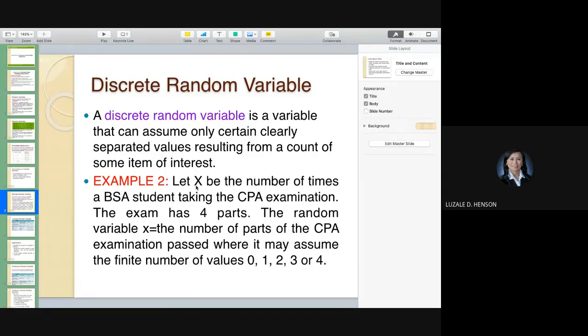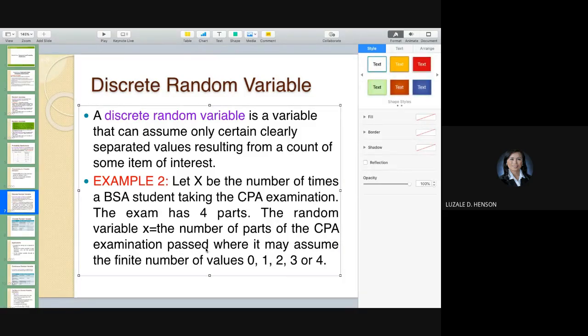For example, let X be the number of times a Bachelor of Science student, graduate student, taking the CPA examination. Say, for example, it has four parts, or although I know it has six, I don't know. Let's just say we have four parts. The random variable X, which is the number of parts of the CPA examination passed by a given student, may assume the finite number of zero, meaning you don't pass any of the four. You may only pass one part among the four, or two parts, or three, or even pass all. So, four over four parts.